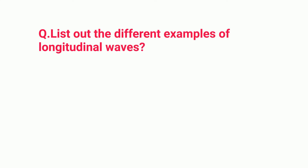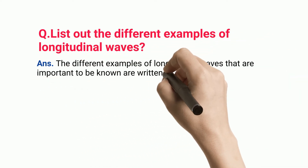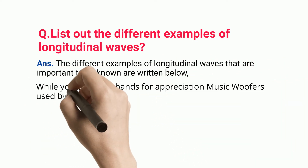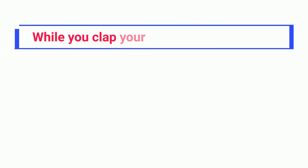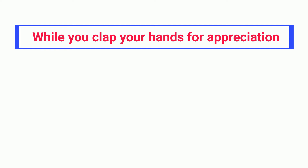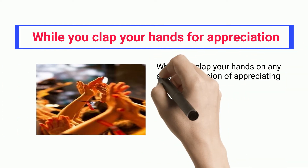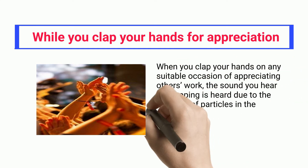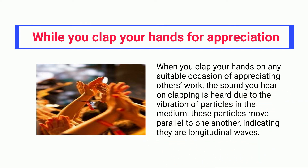Let us list out the different examples of longitudinal waves. The important examples include: clapping your hands for appreciation, music woofers used by a DJ, and shaking of window panels after thunder. When you clap your hands on any suitable occasion of appreciating others, the sound you hear is due to the vibration of particles in the medium. These particles move parallel to one another, indicating they are longitudinal waves.